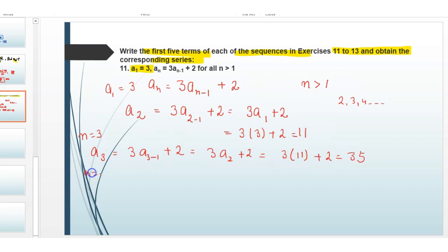Next we put n equals 4. a4 equals 3a(4-1) plus 2, which equals 3a3 plus 2, equals 3 times 35 plus 2, equals 72.